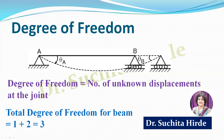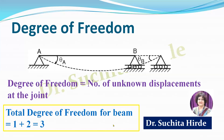So we can calculate degree of kinematic indeterminacy considering axial deformation and neglecting axial deformation. Remember that the magnitude of degree of kinematic indeterminacy neglecting axial deformation is always less than degree of kinematic indeterminacy considering axial deformation. To calculate degree of freedom of a structure, we calculate the degree of freedom of each joint and then add them together.